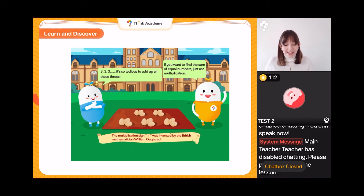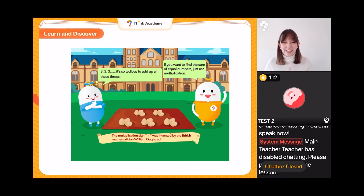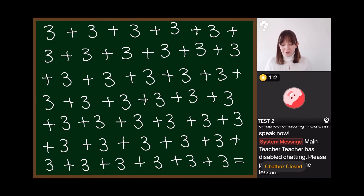Pip says 'three, three, three — it's so tedious to add up all these threes!' He's saying it's really boring. We might look at that and think there's not that many, but what if I asked you to add up all of these threes? That would be a little bit boring, wouldn't it?